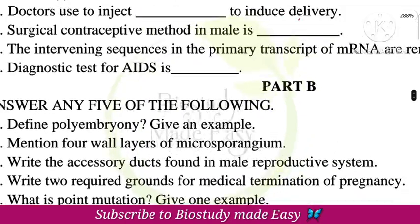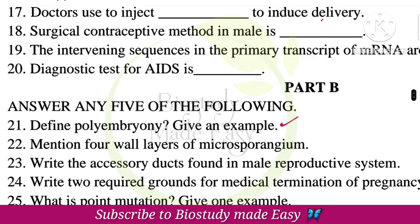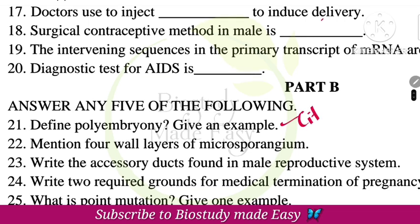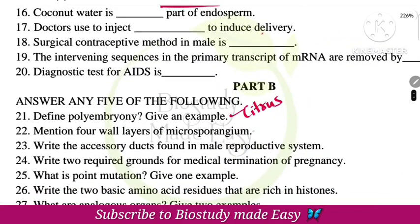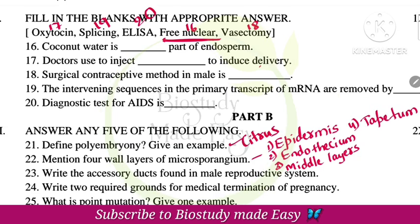Now Part B — two mark questions. Define polyembryony and give an example. The presence of many embryos in a seed is called polyembryony. An example is citrus fruits. Mention four wall layers of microsporangium: epidermis, endothecium, middle layers, and tapetum.